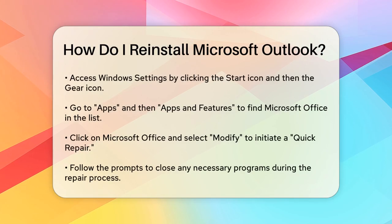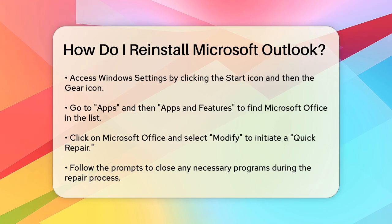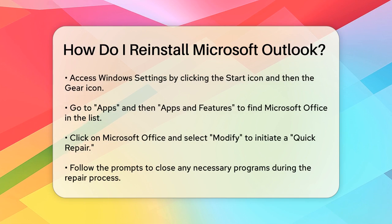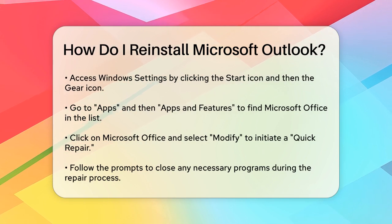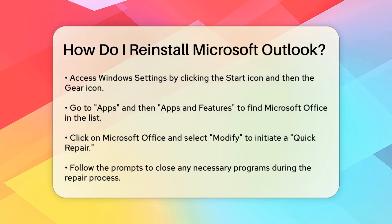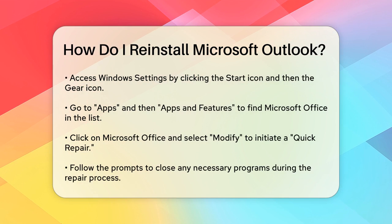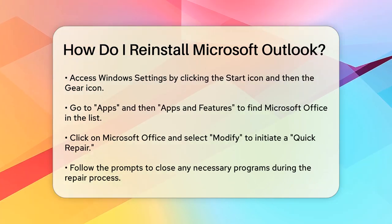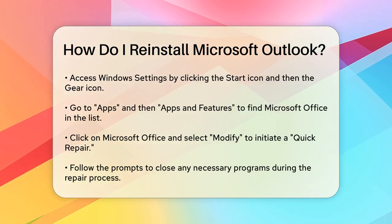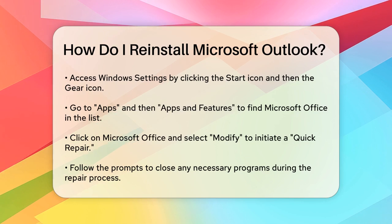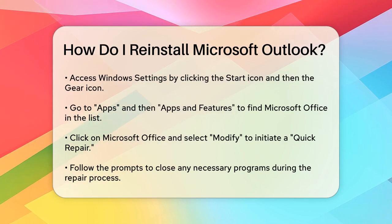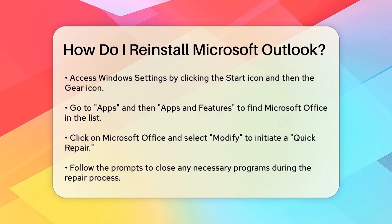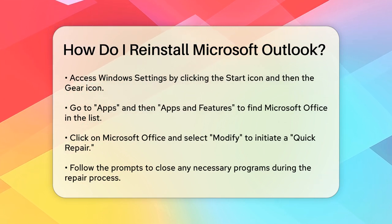Now let's walk through the detailed steps. Open your Windows Settings by clicking the Start icon and then the Gear icon. Navigate to Apps and then Apps & Features. Scroll down to find Microsoft Office in the list, click on it, and then select Modify. On the screen that opens, choose Quick Repair and follow the prompts to close any necessary programs. Let the repair complete and then click Close when it's finished.